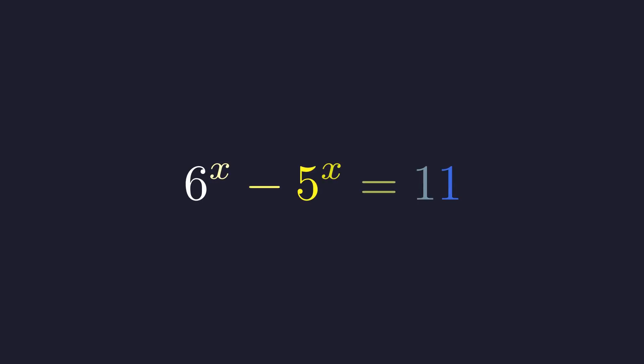Here's a problem that at first glance might seem straightforward, but there's something beautiful lurking beneath the surface. We want to find all values of x where 6 to the power of x minus 5 to the power of x equals 11.